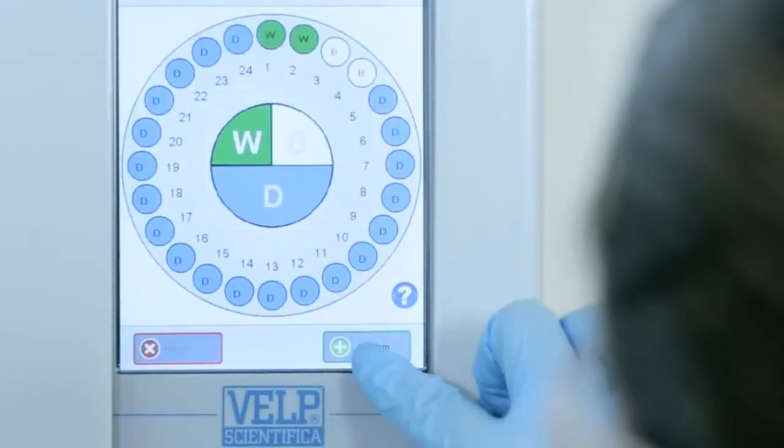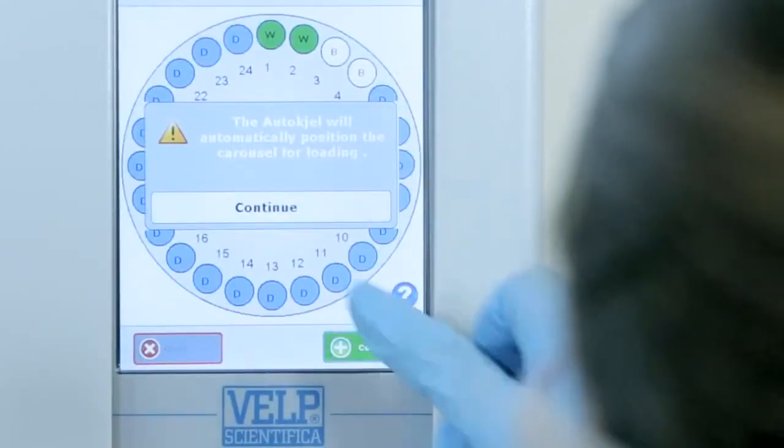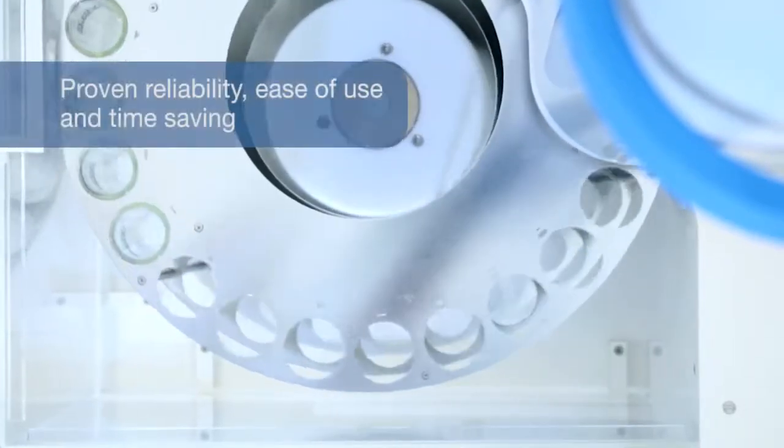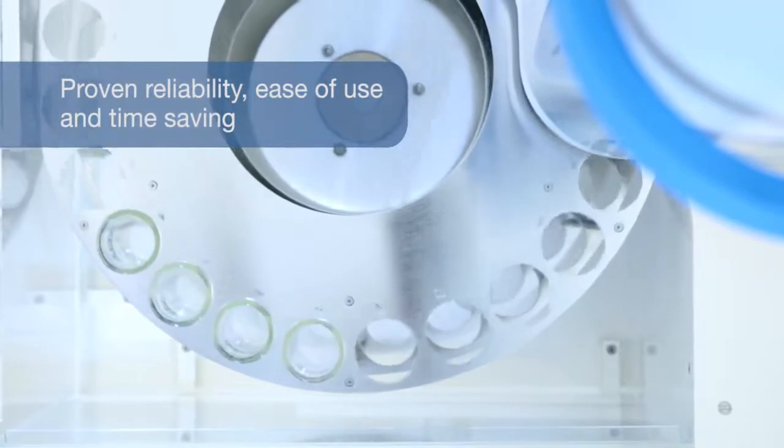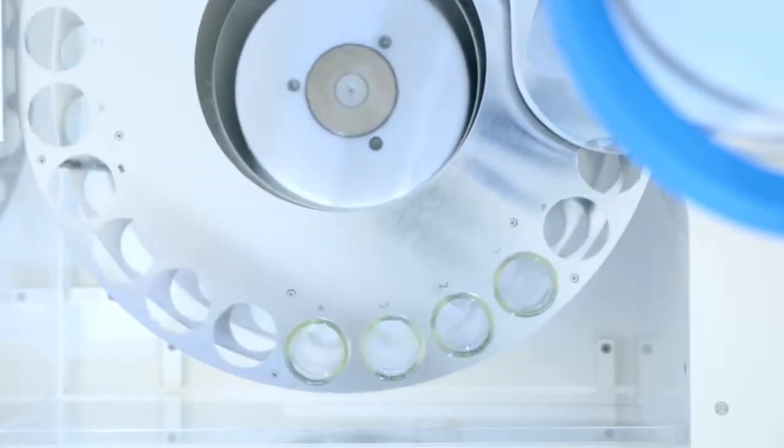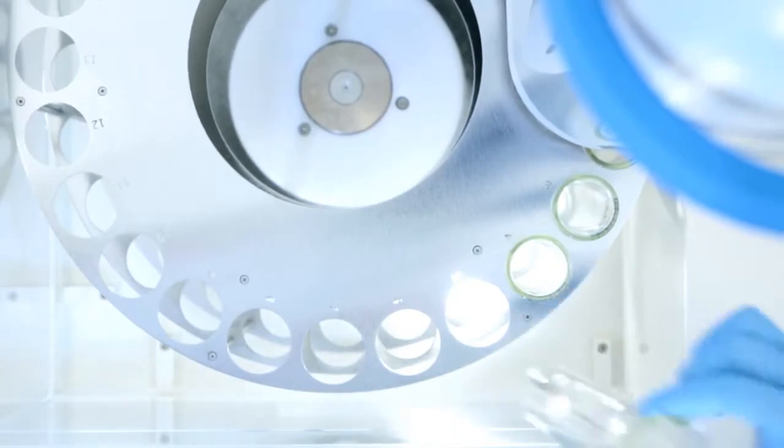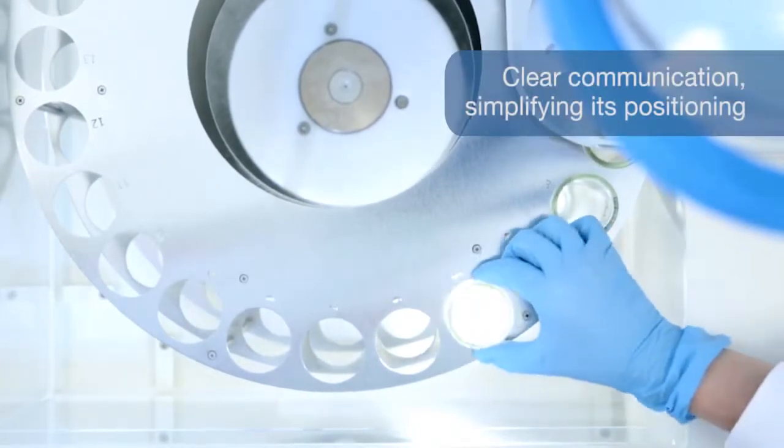When combining the UDK169 with the AutoKiel AutoSampler, you will be supported by proven reliability, ease of use and time saving for safer and simpler activities. A light shows where to load the digestion test tube, simplifying its positioning.